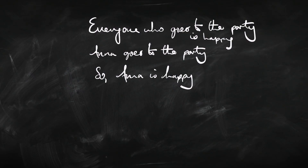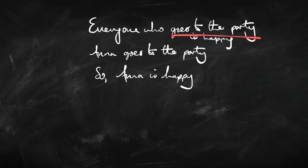Propositional logic deals with ands, ors, nots, if-thens, and if-and-only-ifs. On the face of it, there are none of those in these premises or the conclusion. We're actually going to see that there is an if-then hidden in the first premise. But even if we write in an if-then, the antecedent would be something like 'everyone who goes to the party' — whereas our second premise says 'Anna goes to the party.' So how do we get from 'everyone who goes' to 'Anna goes'? That's what we need for modus ponens to work here, and basically we do that with quantifiers.